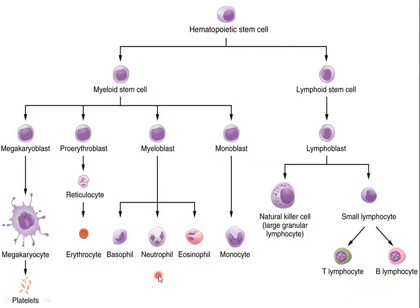Erythrocytes are the red blood cells. Platelets are also well known. Basophils, neutrophils, eosinophils, monocytes, natural killer cells, T lymphocytes, and B lymphocytes are all collectively called white blood cells.